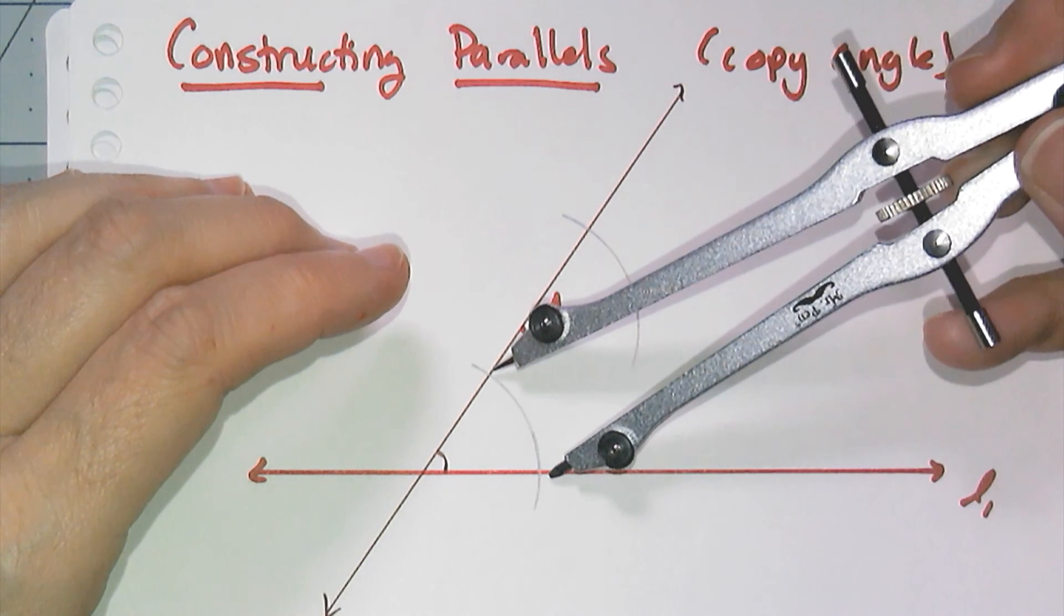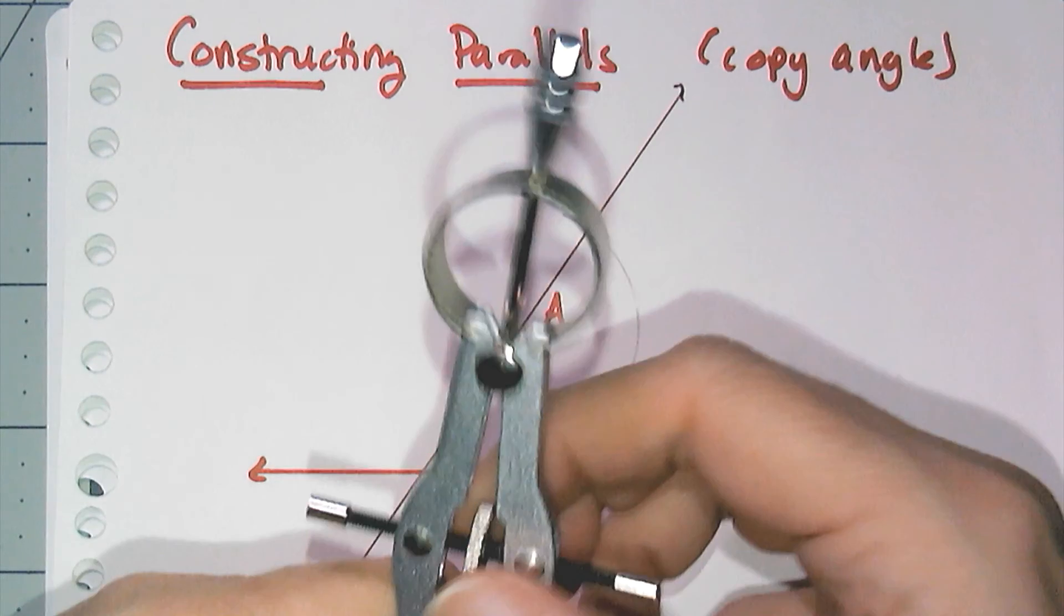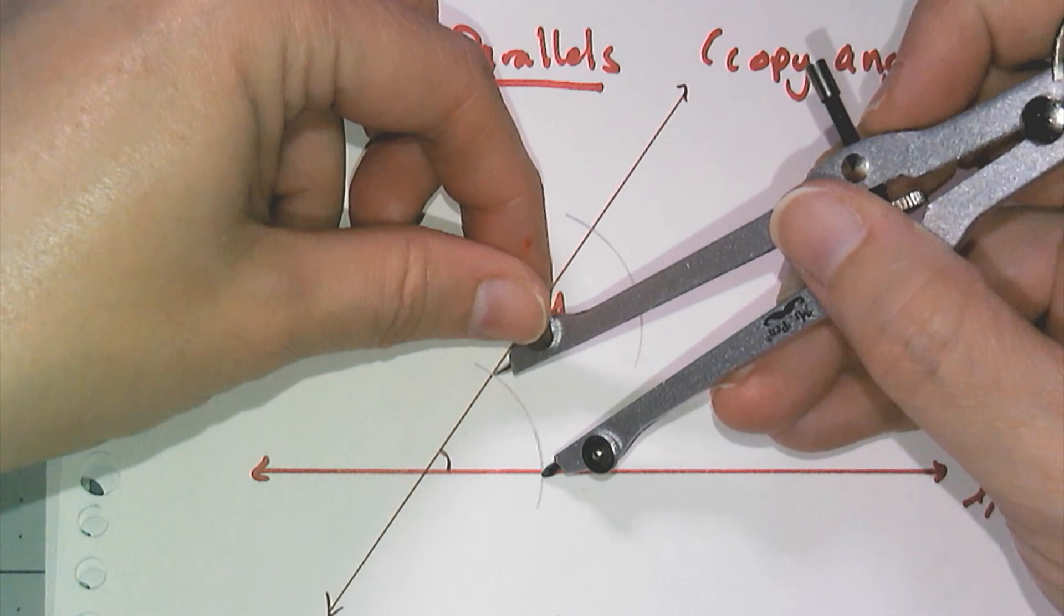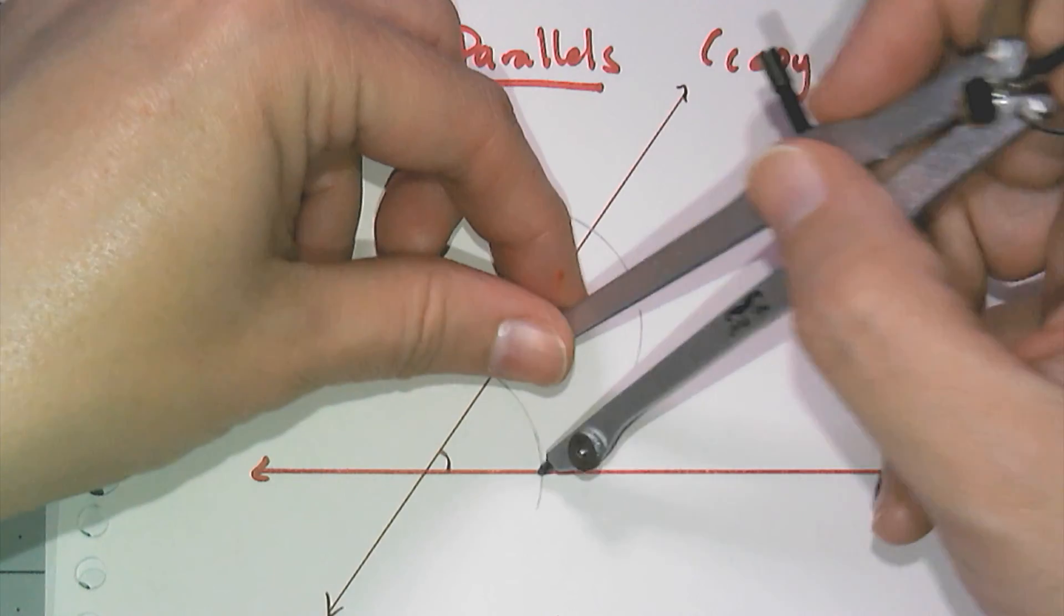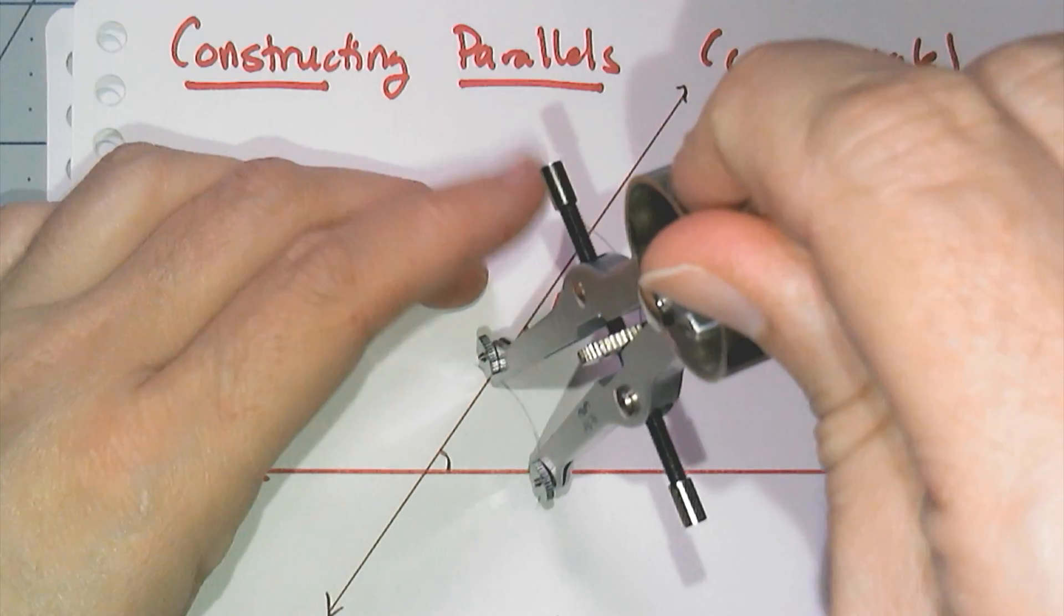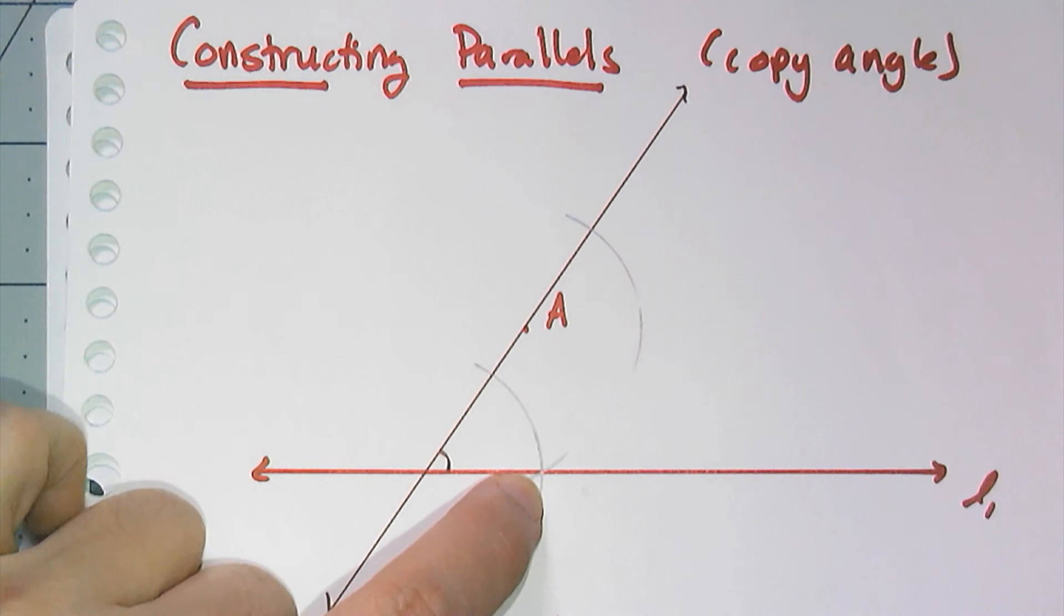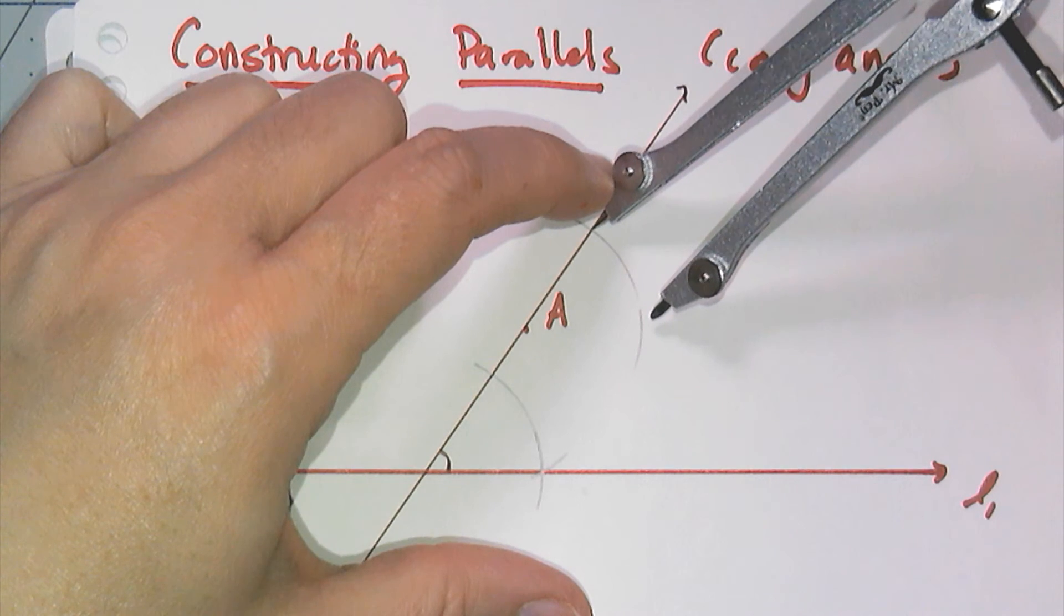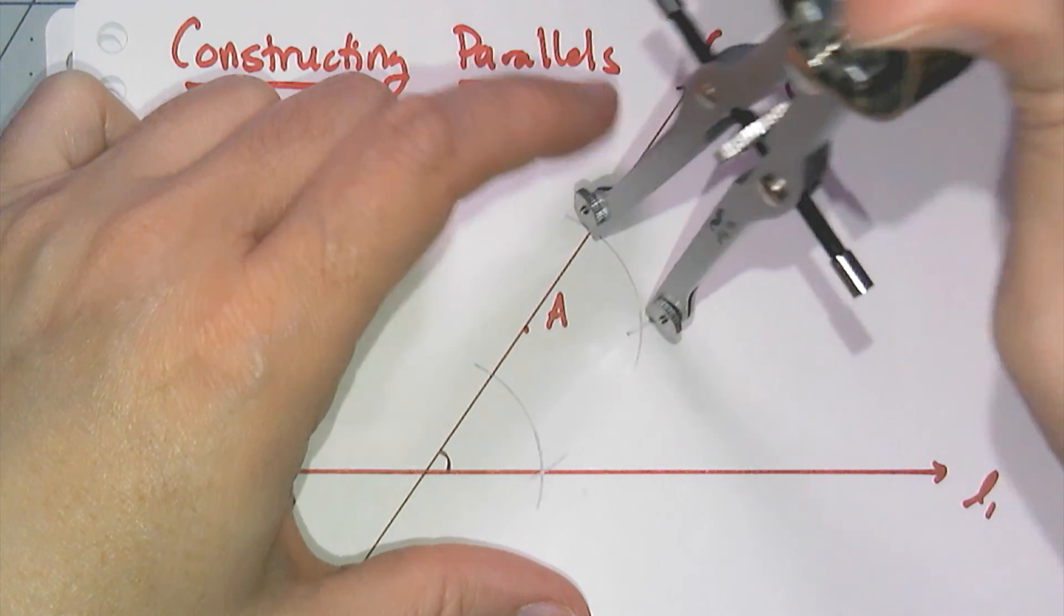So I need to measure the distance between these intersection points because that is the distance I want to replicate up where that point A is. So I have to adjust my compass. And remember, when you adjust your compass, double check. Do a little swing there to make sure that you actually intersect at the right point. And so I need to replicate that by going to this intersection point and swing a little arc-y there.